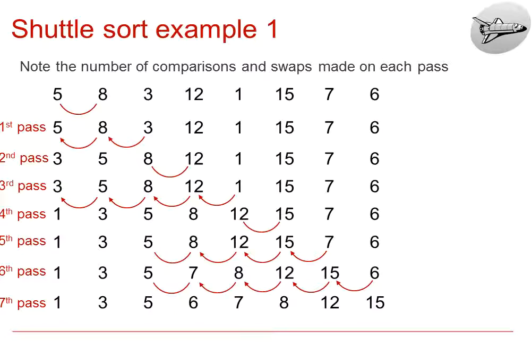We then just have the 6 compared to the 15, and the 6 swaps with the 15 and the 12, and the 8 and the 7, but not with the 5, so therefore, the pass ends. Therefore, by the end of the seventh pass, we have the list in ascending order.